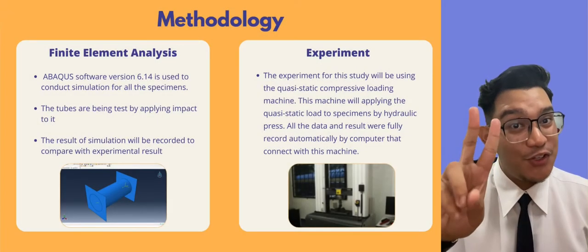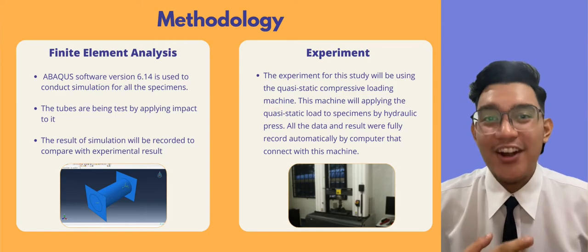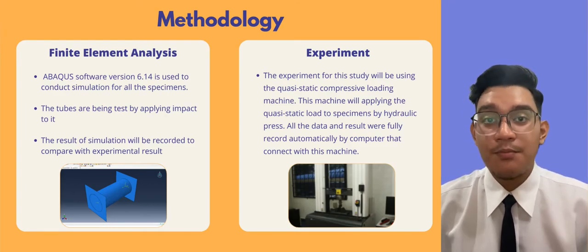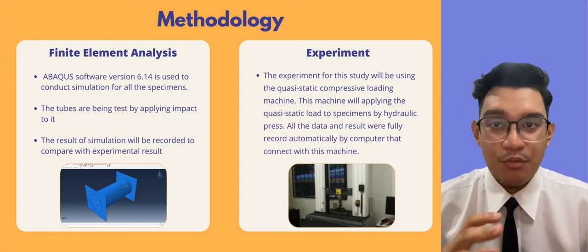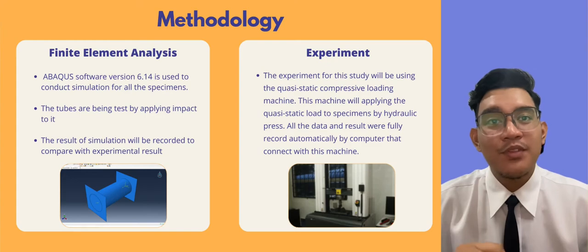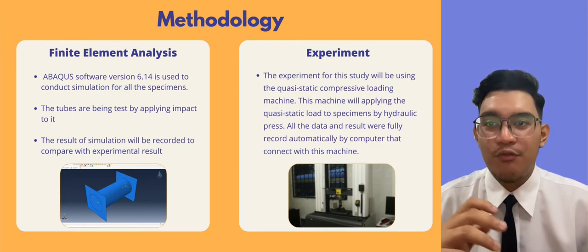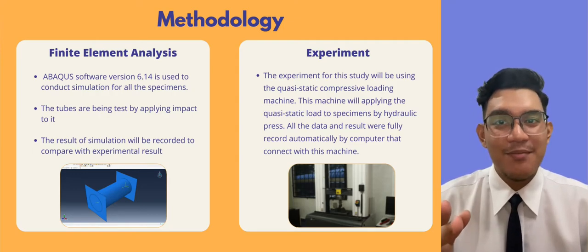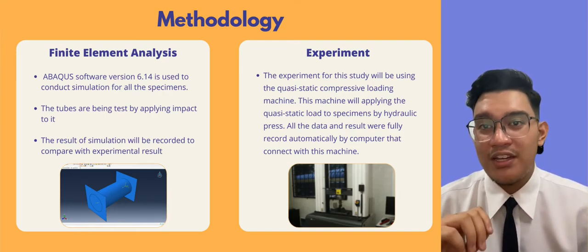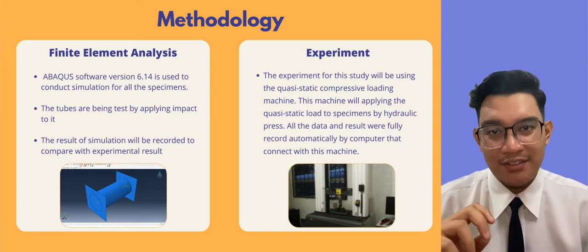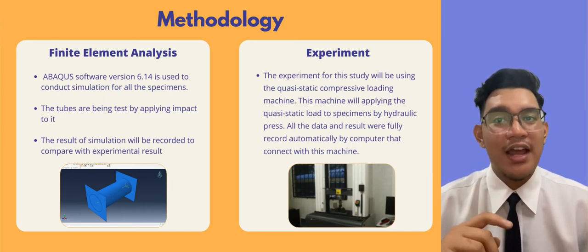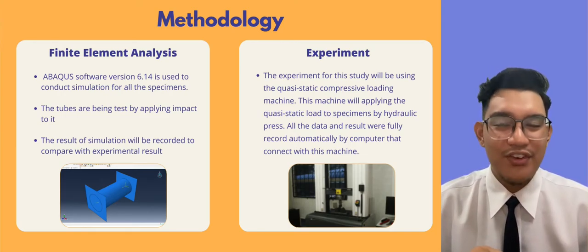For the methodology, two methods are used to obtain results. The first is finite element analysis — ABAQUS software version 6.14 is used to conduct simulations for all specimens, applying impact to the tube, and the simulation results are recorded to compare with experimental results. The second method is experiment, using a quasi-static compressive loading machine that applies quasi-static load to the specimen by hydraulic press. All data and results are automatically recorded by a computer connected to the machine.